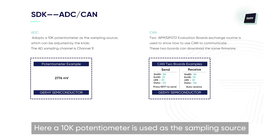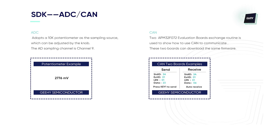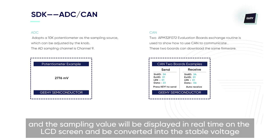The first routine is ADC. A 10K potentiometer is used as the sampling source. We can adjust the knob on the target to change the instantaneous resistance of the potentiometer. For AD sampling, channel 9 is used, and the sampling value will be displayed in real time on the LCD screen and converted into the stable voltage.